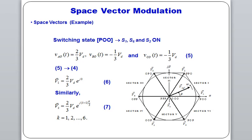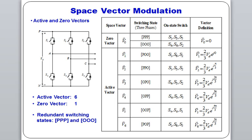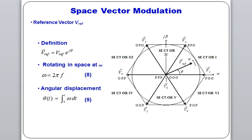Substituting the values for the POO switching state gives the v1 voltage vector. There are 8 switching states total: 6 active switching states and 2 zero vectors. These yield 6 sectors correspondingly, and we can take 6 switching states as vk. The triple-P and triple-O are the two zero vectors, and the other active vectors yield certain outputs. The reference vector v-reference is defined as |v-reference| × e^(jθ), rotating in space at angular frequency omega = 2πf, with angular displacement θ = ωt.